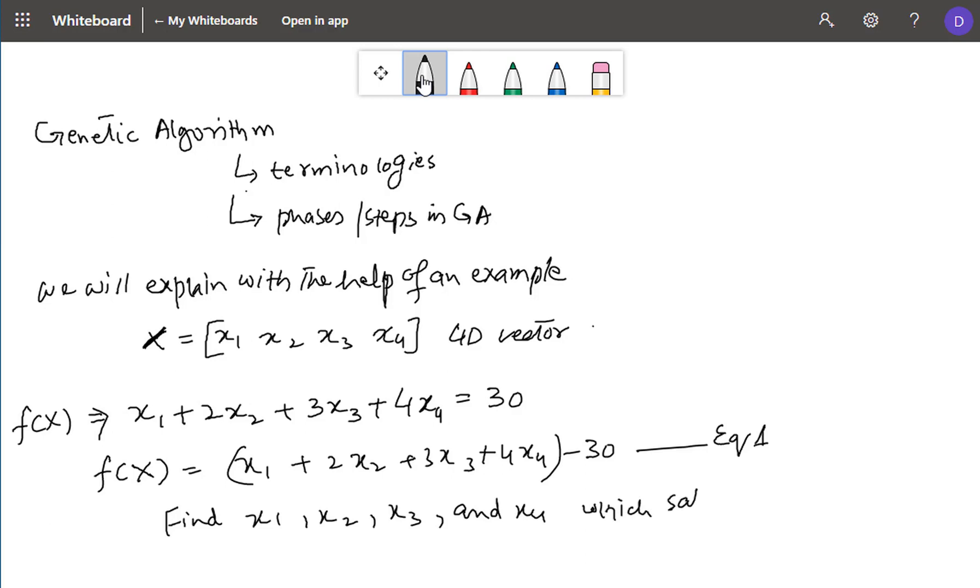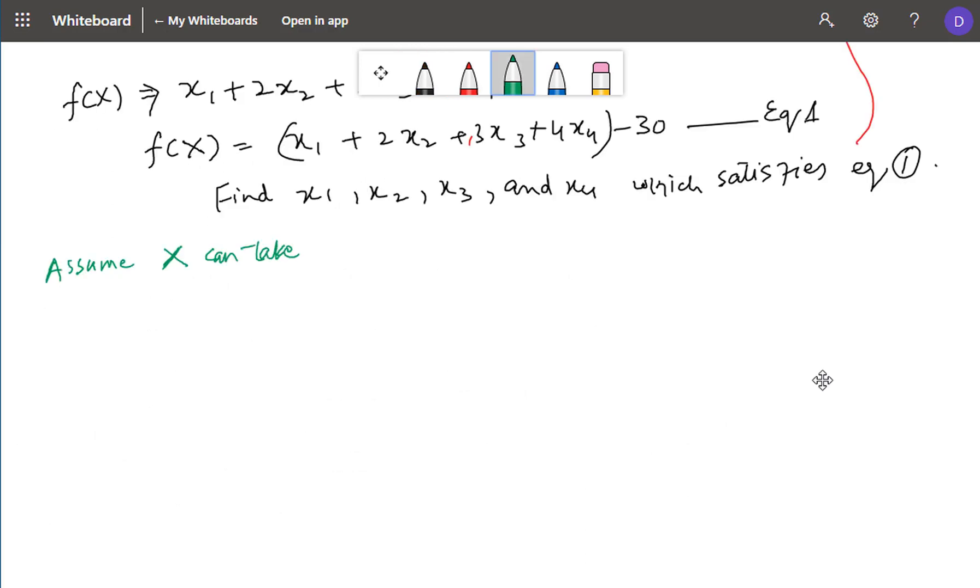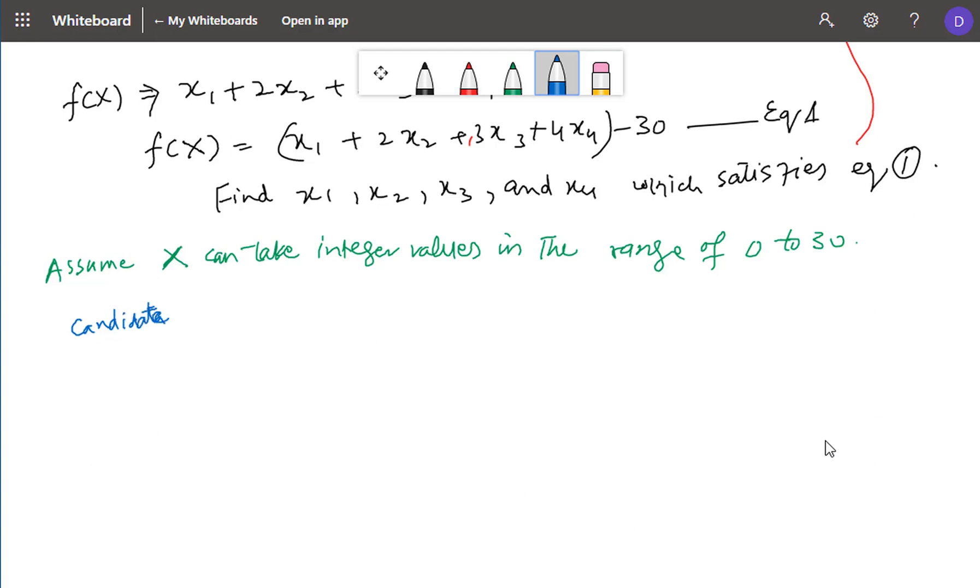Let's try solving this problem. Assume that we are told that x1, x2, x3 and x4 belong to the set of integers in the range of 0 to 30. This problem can be solved using other methods, but here we will solve it using genetic algorithms.